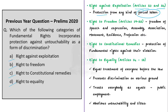The right to freedom is guaranteed by Articles 19 to 22 of the Constitution. These rights are concerned with freedom of speech and expression, freedom of assembly, freedom of association, movement, residence, profession, etc. It does not deal with untouchability, so this is also an incorrect option.